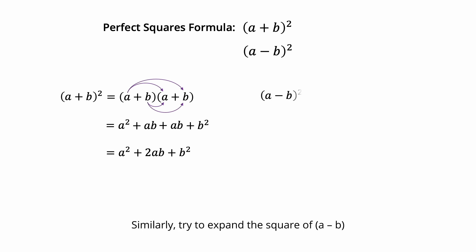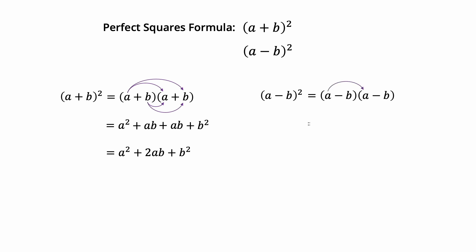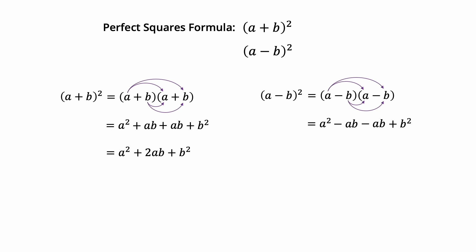Similarly, try to expand the square of a minus b. a times a equals a squared. a times minus b equals minus ab. Minus b times a equals minus ab. And minus b times minus b equals plus b squared. Minus ab minus ab equals minus 2ab. Simplify to a squared minus 2ab plus b squared.